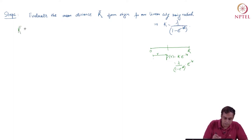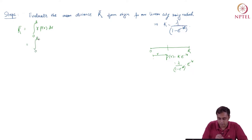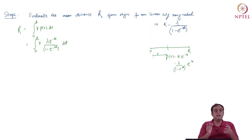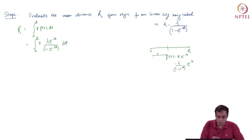We have r̄ given as the integral from 0 to R of r times p(r) dr. Writing out p(r), this becomes the integral from 0 to R of r times lambda e^{−λr} over (1 minus e^{−λR}) dr. We take everything that is not a function of small r — the integration variable — outside the integral.